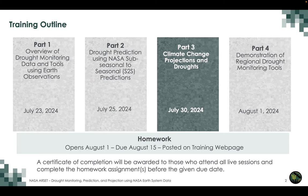Last week in part 1 we had an overview of drought monitoring data and tools using Earth observations. Then in part 2 we focused on drought prediction using NASA's subseasonal to seasonal prediction system. And today we will focus on climate change projections from global climate models to examine changes projected in temperature and precipitation over the next several decades.